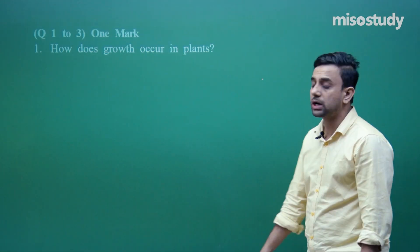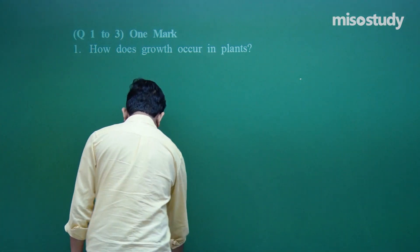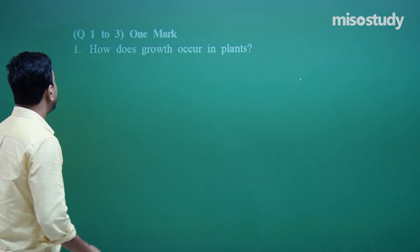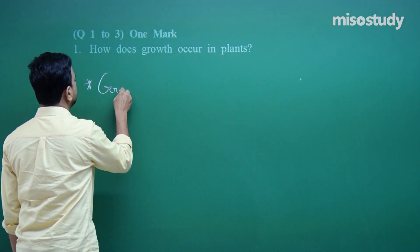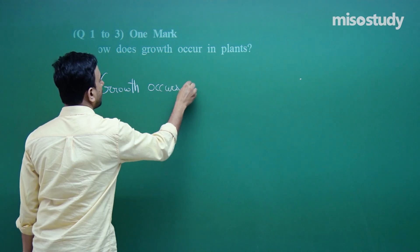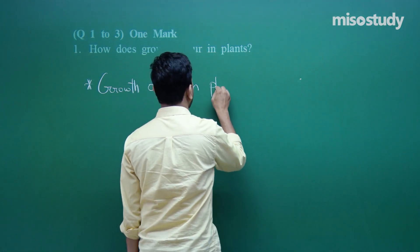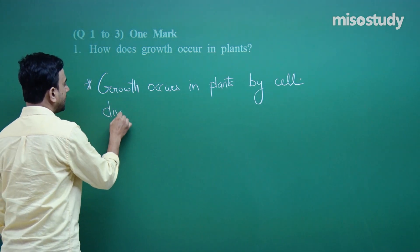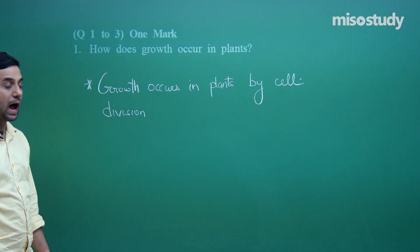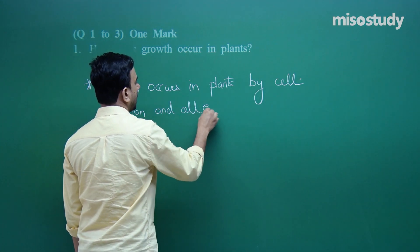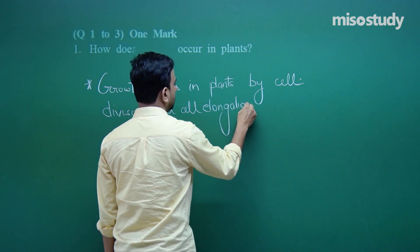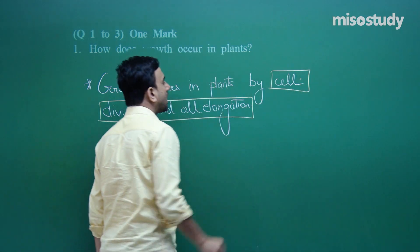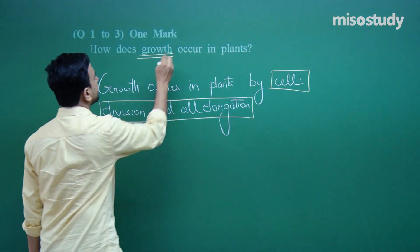We will start with the first question: how does growth occur in plants? All these are one-markers and we have to be very short and precise. Growth occurs in plants by cell division and cell elongation.